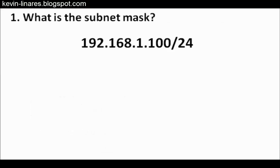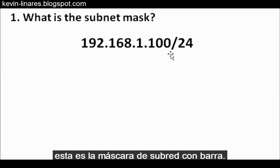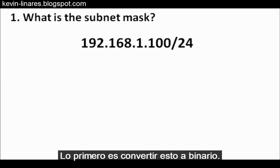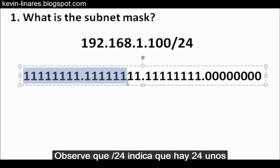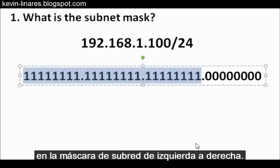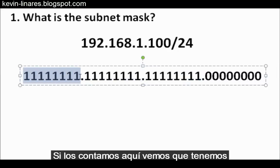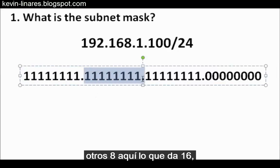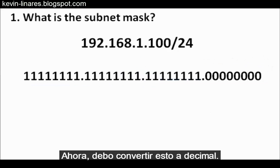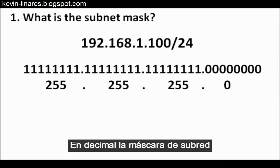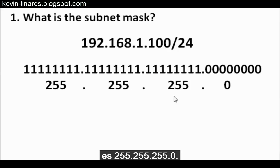What is the subnet mask? If our IP address is 192.168.1.100/24, we need to convert the /24 slash notation to binary. Slash 24 denotes that there are 24 ones in the subnet mask, counting from left to right — eight ones in the first octet, another eight makes 16, and another eight makes 24. Converted to decimal, the subnet mask is 255.255.255.0.